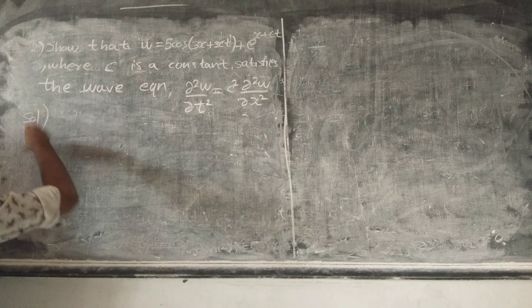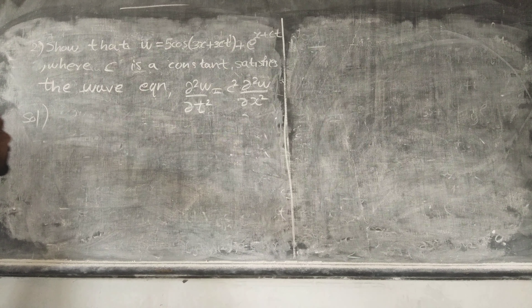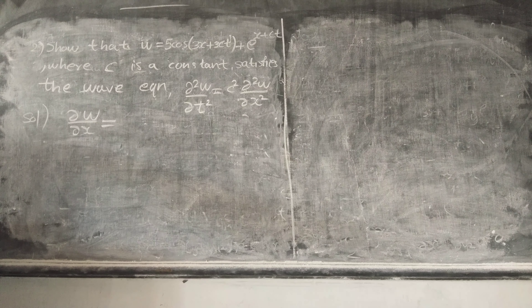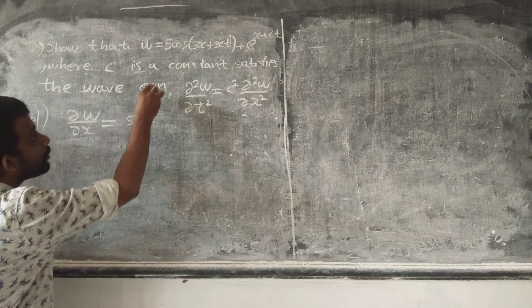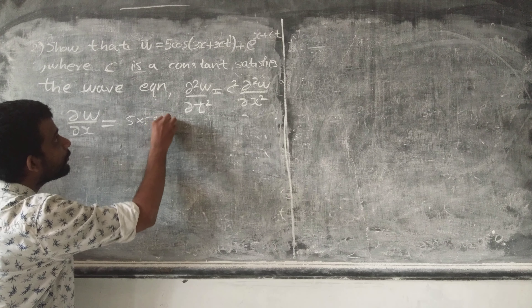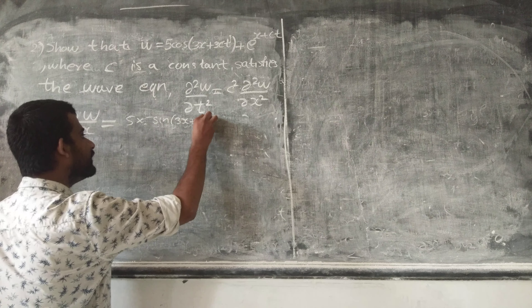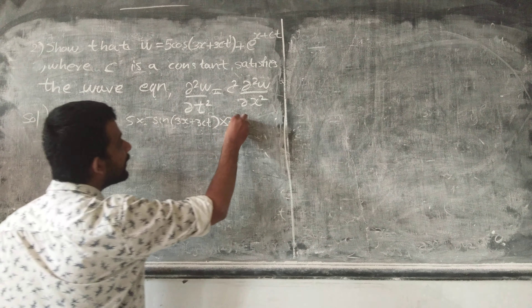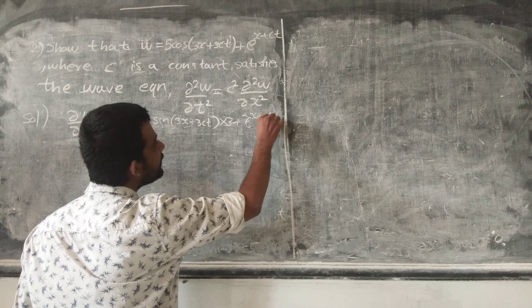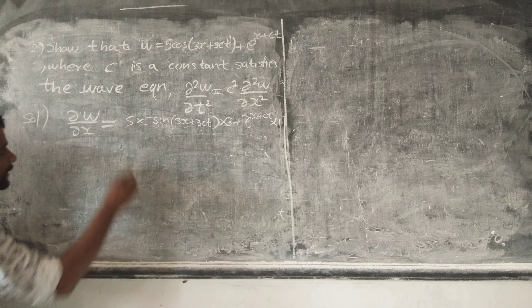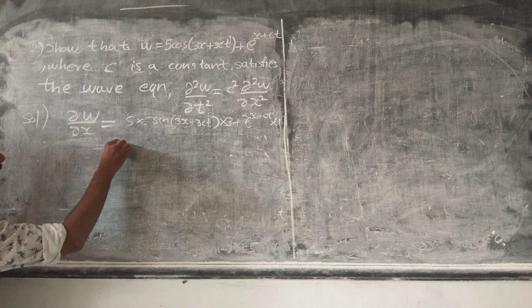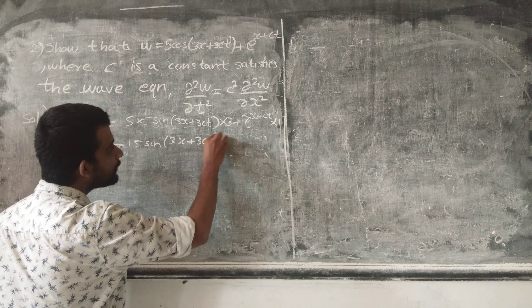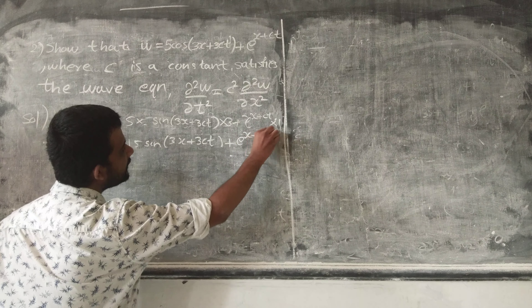So, computing the partial derivative of w with respect to x: dou w by dou x equals 5 times minus sine of (3x + 3ct) into 3, plus e raised to (x + ct). This simplifies to minus 15 sine of (3x + 3ct) plus e raised to (x + ct).